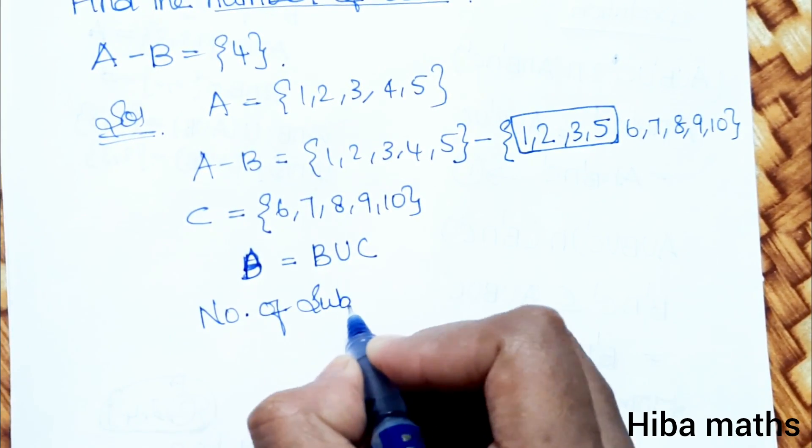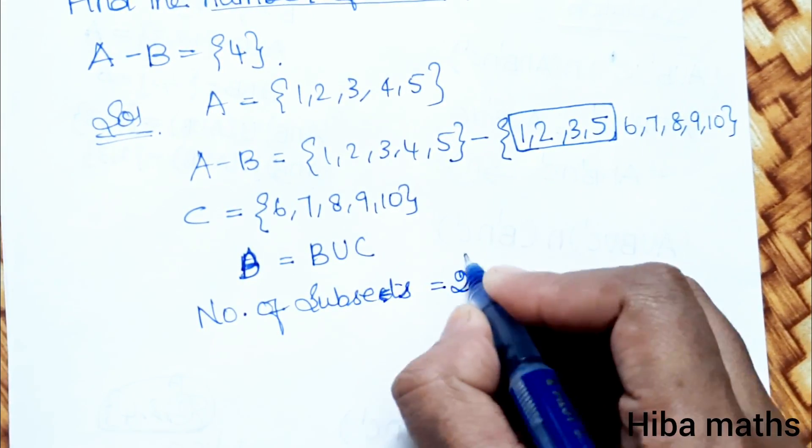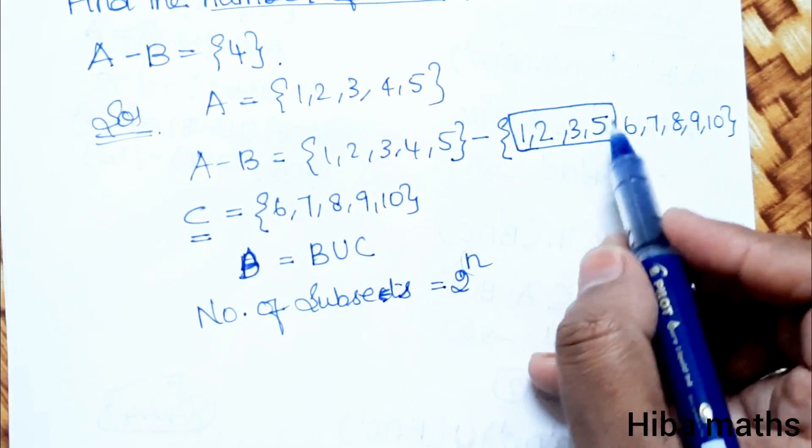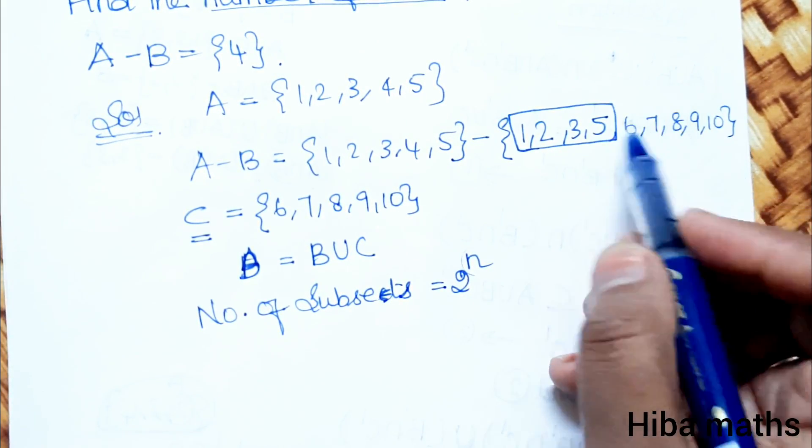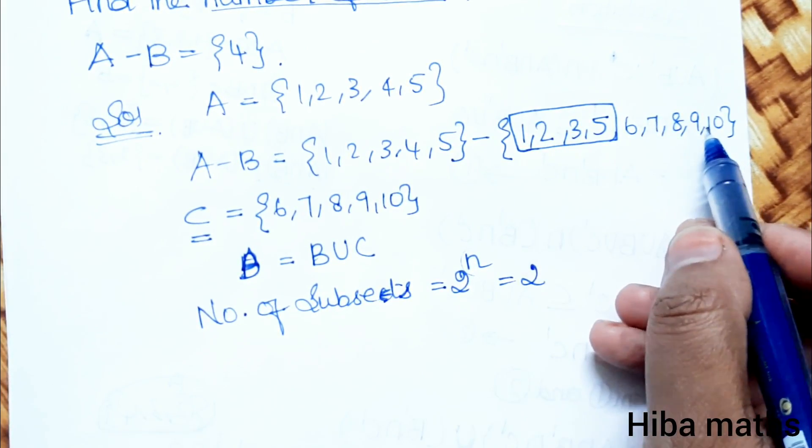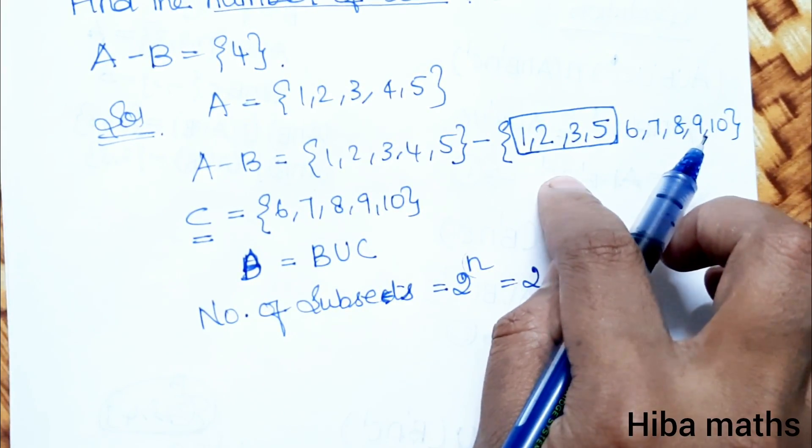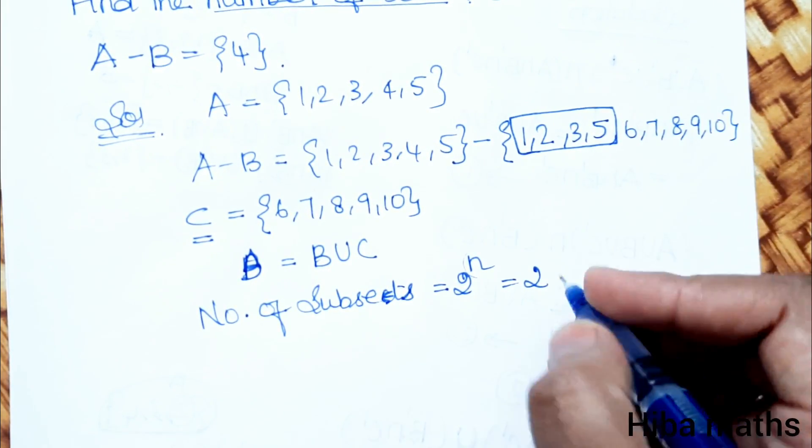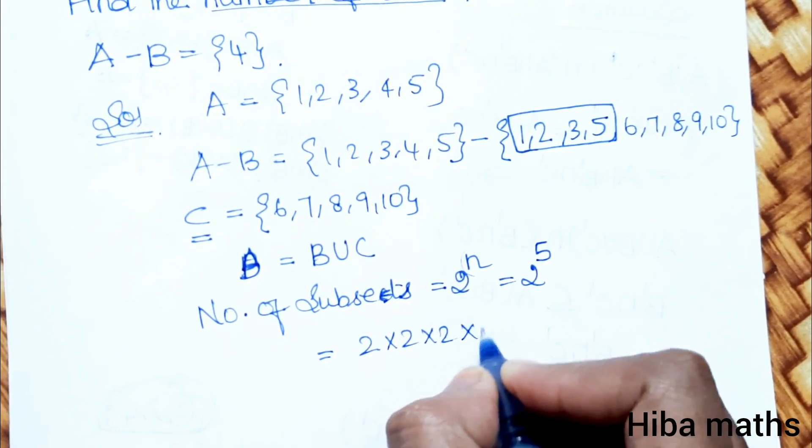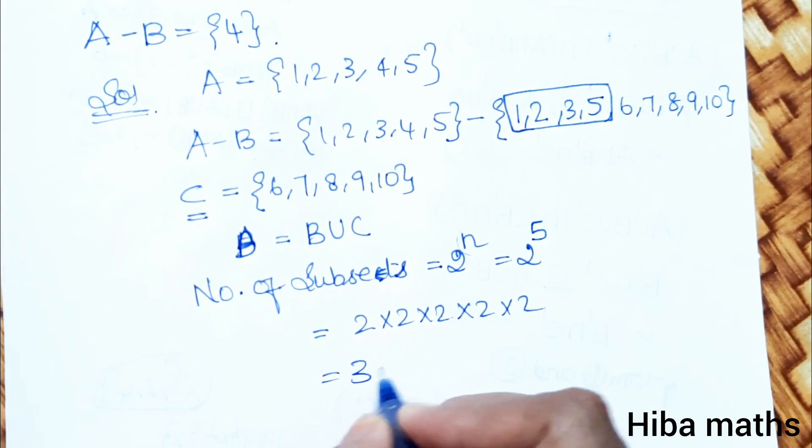Number of subsets: formula 2 power n. If I put the n as C, the balance is 5, so we put it on C. So the balance of 5 is 2 power 5. 2 power 5 is 2 into 2 into 2 into 2 into 2. So 2 twos are 4, 4 twos are 8, 8 twos are 16, 16 twos are 32.